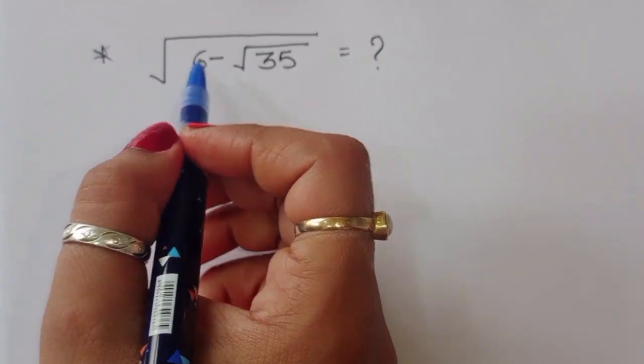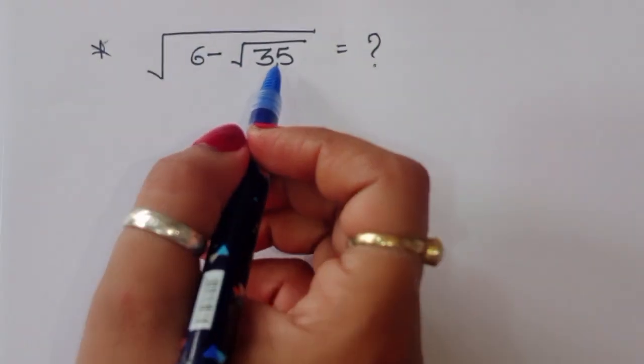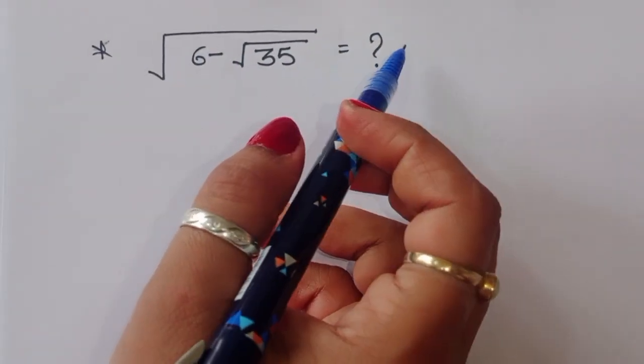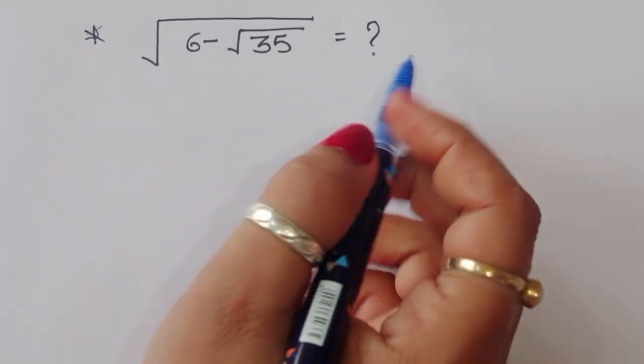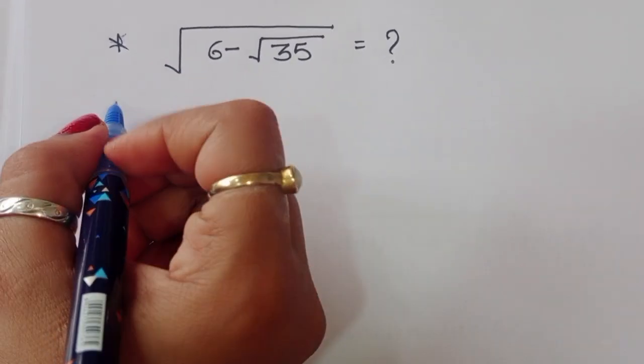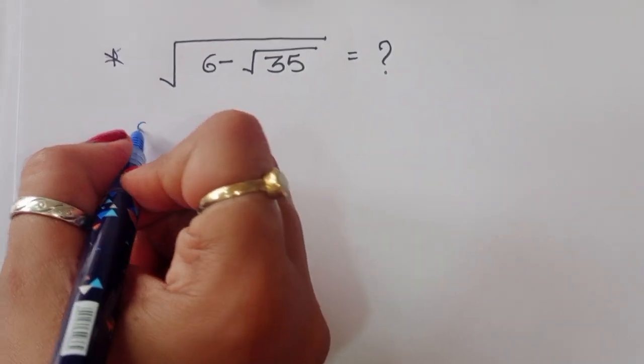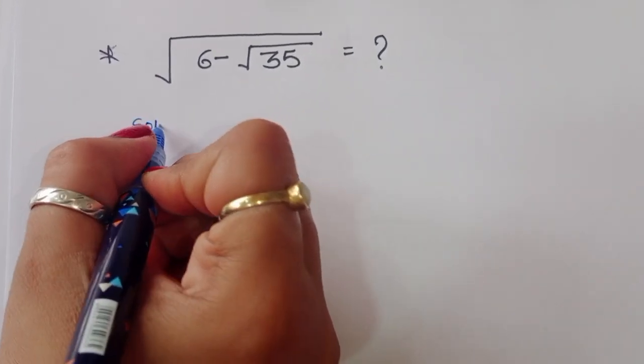The question is: given √(6 - √35), what is the value of this term? How can we find out the value? Let's see the solution.